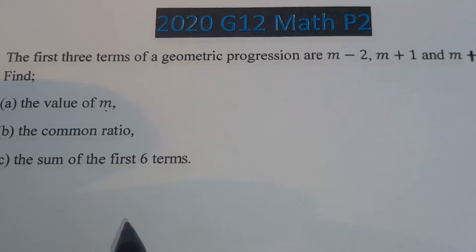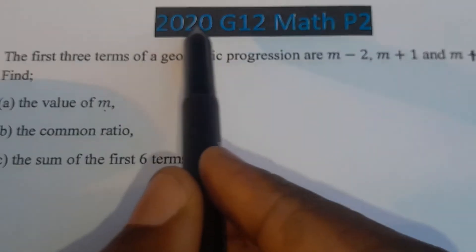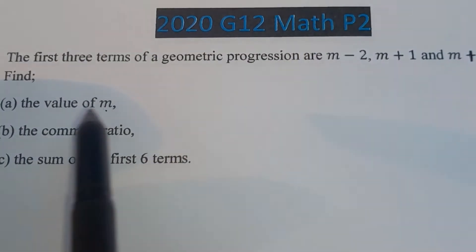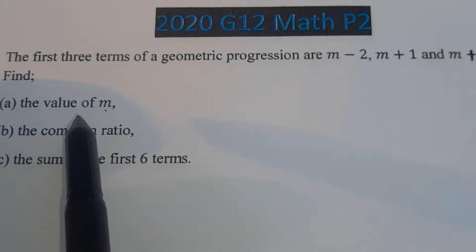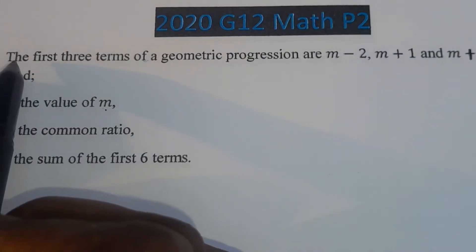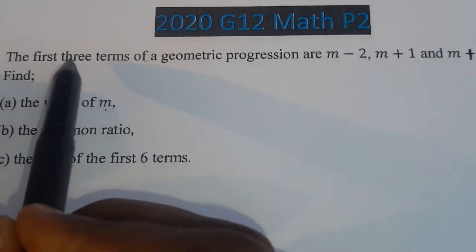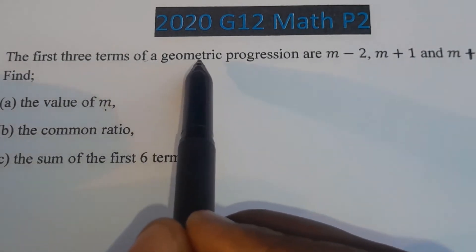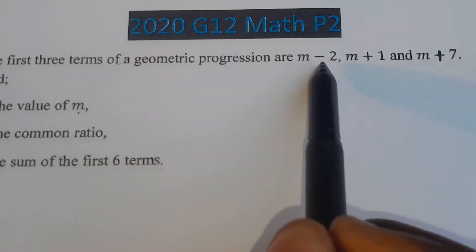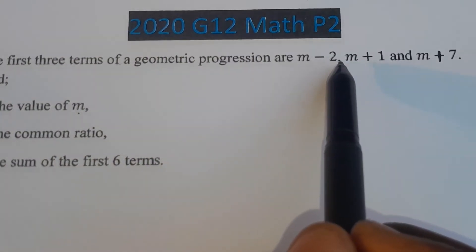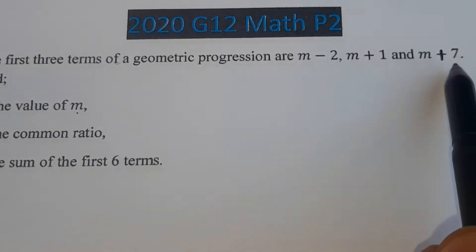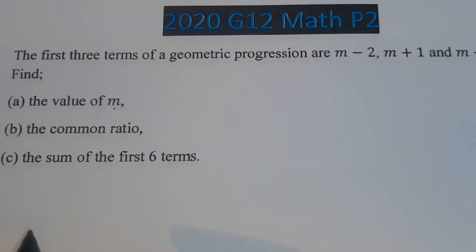In this video, we are going to look at the 2020 Grade 12 Mathematics Paper 2 based on the geometric progression. The information given says the first three terms of a geometric progression are m minus 2, m plus 1, and m plus 7.